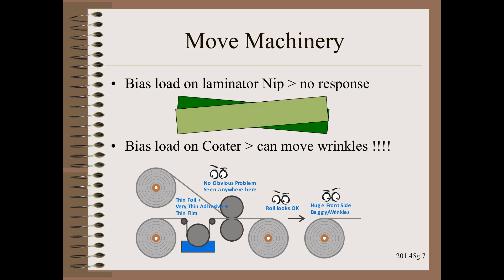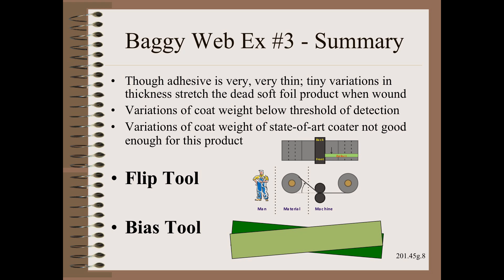Finally, we bias the coater. Yippee! We see a noticeable change in wrinkling response. The hard part of troubleshooting is now done. Though the adhesive is very, very thin, tiny variations in thickness stretch the dead soft foil product when wound. Though the variations of coat weight are below the threshold of easy measurement, the coating is simply not level enough. Though this is a brand new state-of-the-art coater, the coater as set up is simply not good enough for this product.